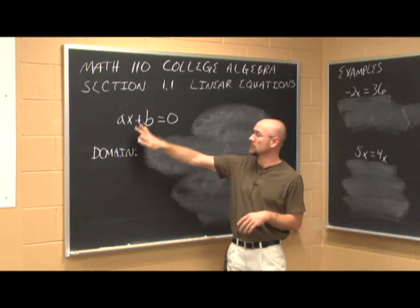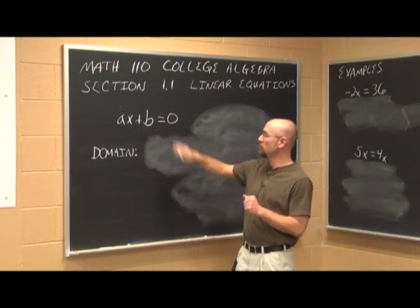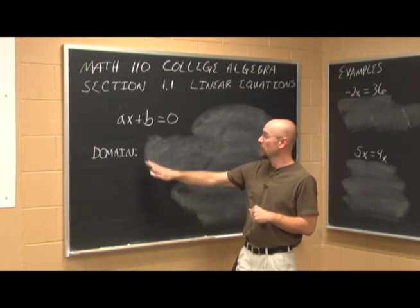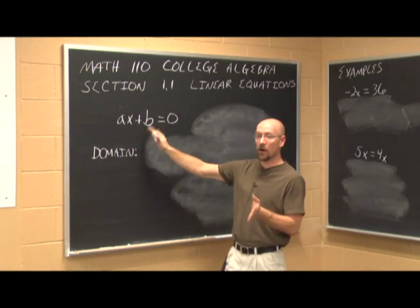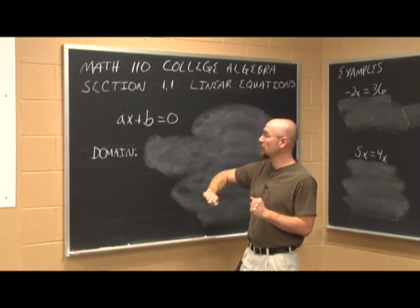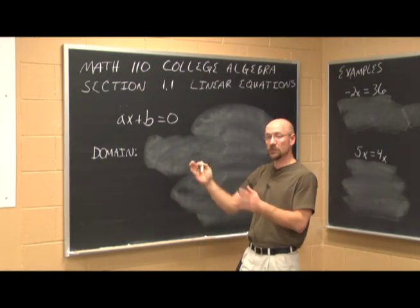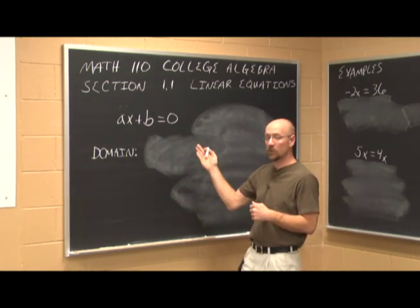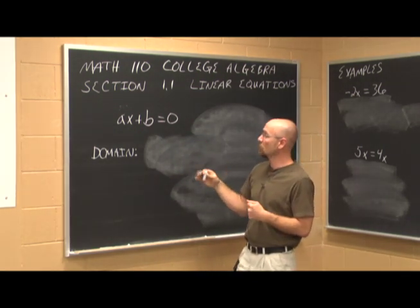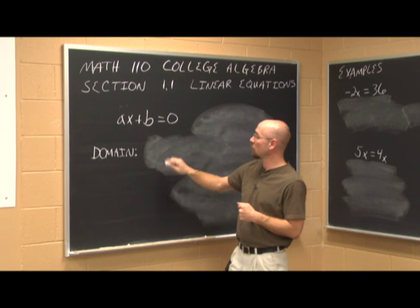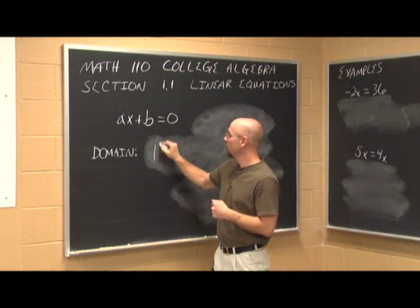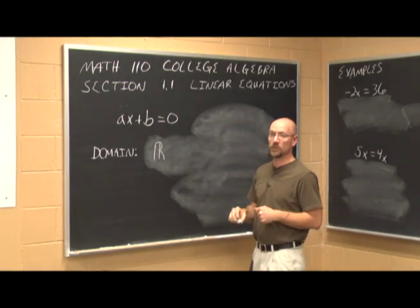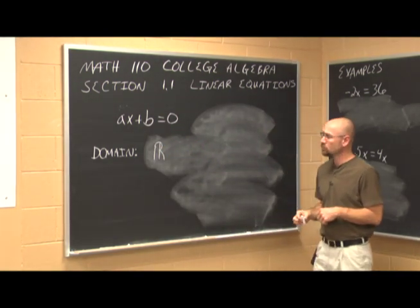Let's look at this example in most general form. We want to consider the domain. There are no fractions, no x's in denominators, and no square roots, so our domain is all real numbers — and that's the symbol that represents all real numbers.